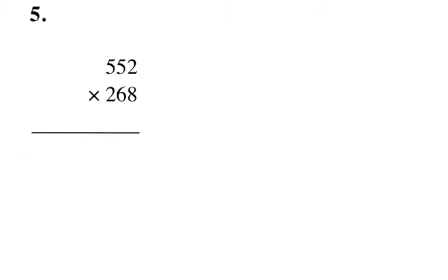The next example is similar — I need that acronym: many zoos, many animals. My first step is to multiply. Two times eight is 16 — write down the six, carry the one. Eight times five is 40 plus the one is 41 — write down the one, carry the four. Eight times five is 40 plus the four is 44. Then I have to do the same thing with the six, so I add a zero. Six times two is 12 — write down the two, carry the one.